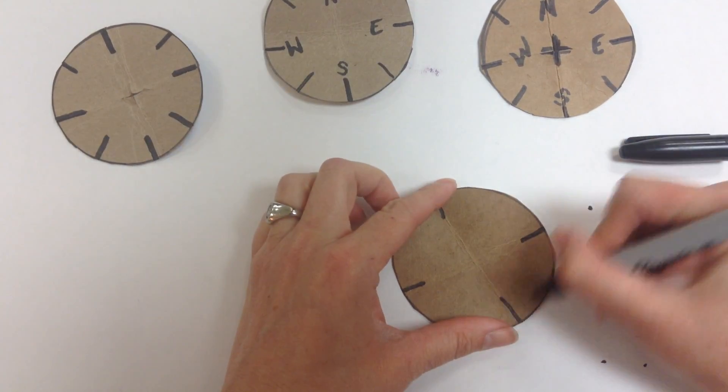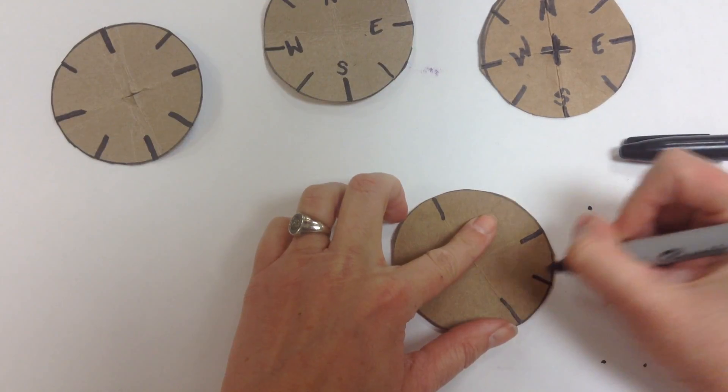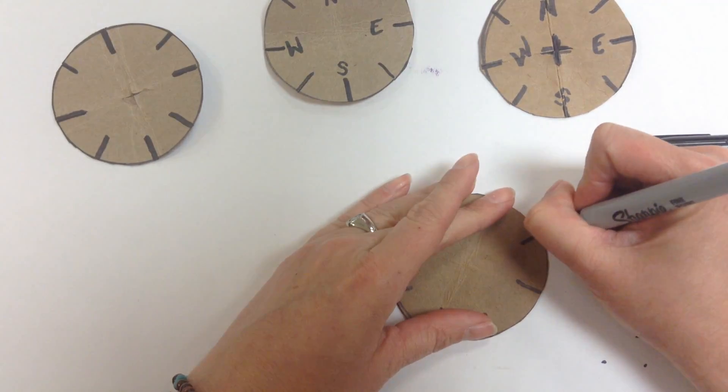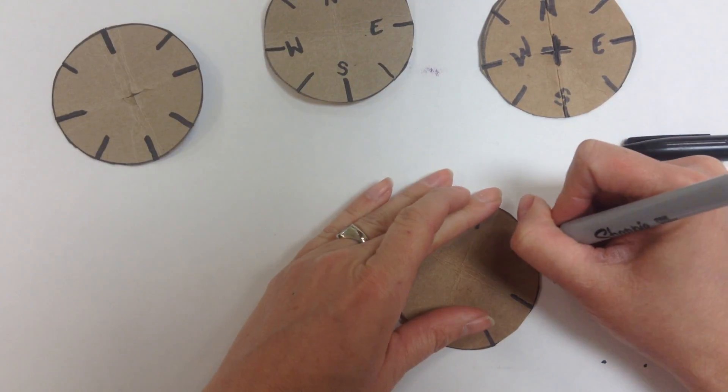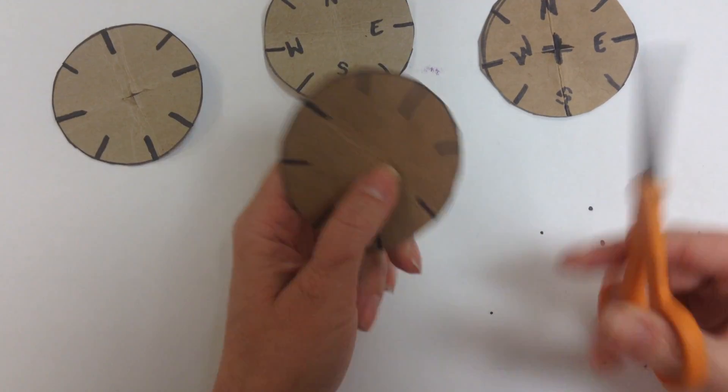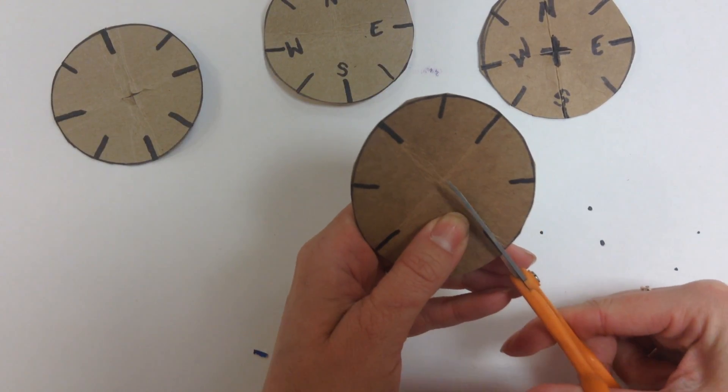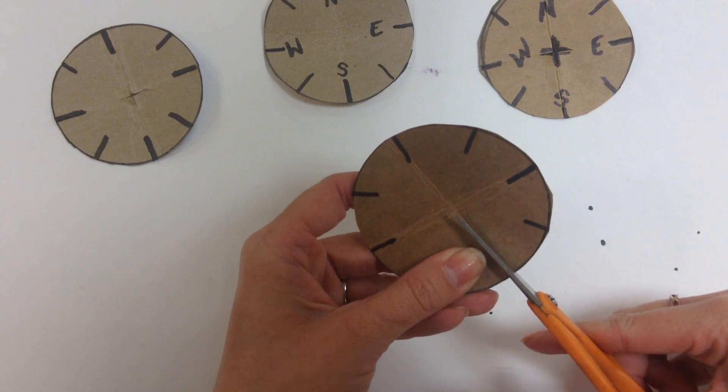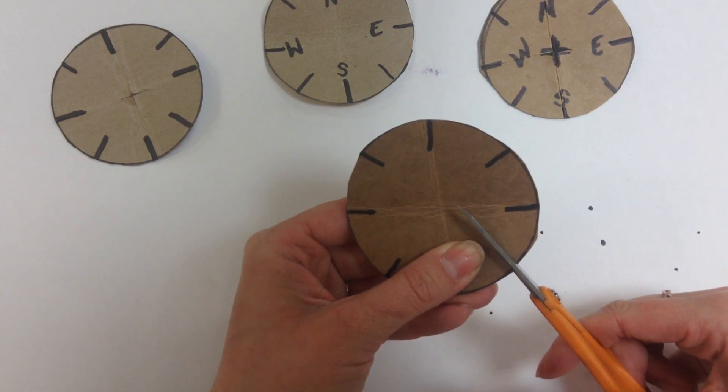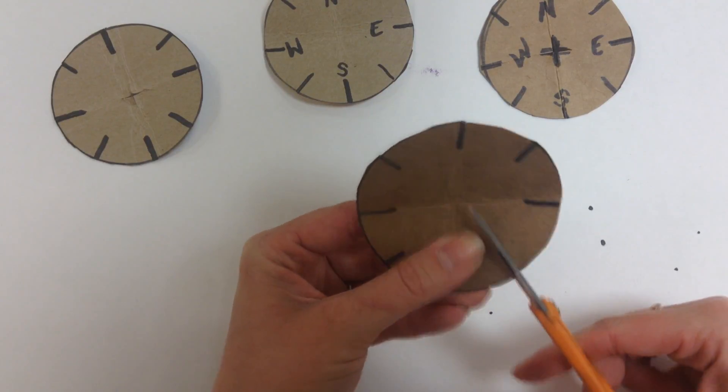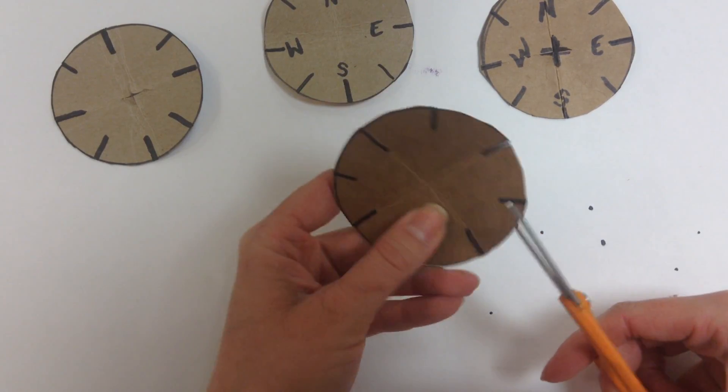Then all you have to do is find about halfway between each one of those and make a mark about the same length. You're marking these off because you're going to cut a slit on each mark, and that's where you'll put the string when you start the braiding process. It's okay if your cuts are not exactly the same on each one.